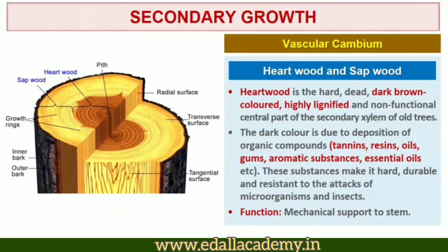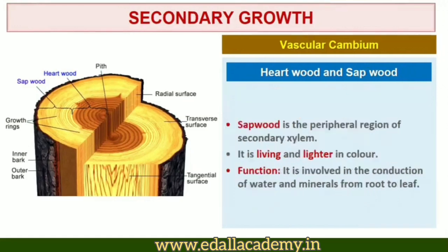Next, compare heartwood and sapwood. In old trees, the greater part of secondary xylem is dark brown due to deposition of organic compounds like tannins, resins, oils, gums, aromatic substances, and essential oils in the central or innermost layers of the stem. These substances make it hard, durable, and resistant to attacks of microorganisms and insects. This region, comprising dead elements with highly lignified walls, is called heartwood. Heartwood does not conduct water but gives mechanical support to the stem.